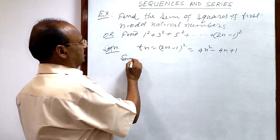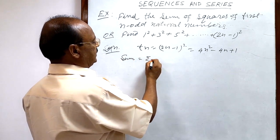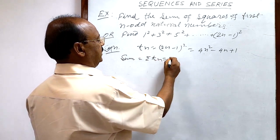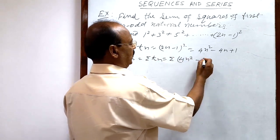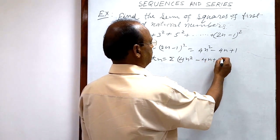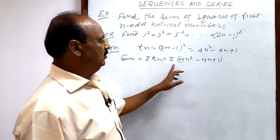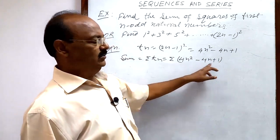We have to find out sum. Sum means sigma of tn, that is sigma of (4n² - 4n + 1). Now, this sigma will be distributed over each of these 3 terms.